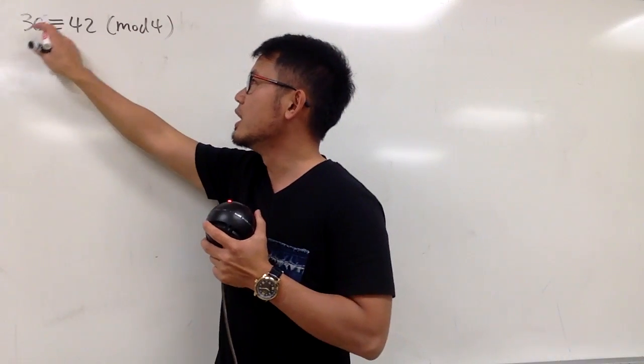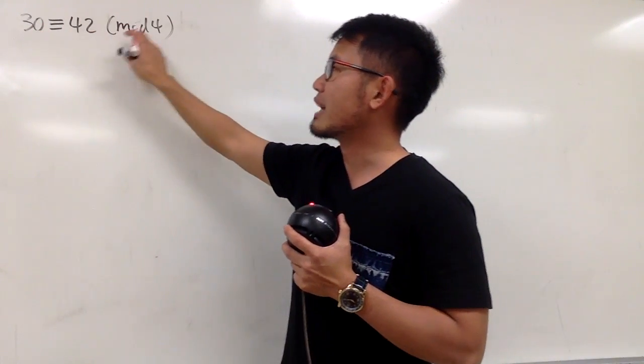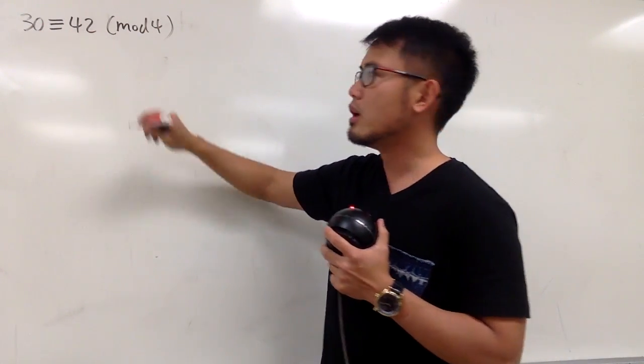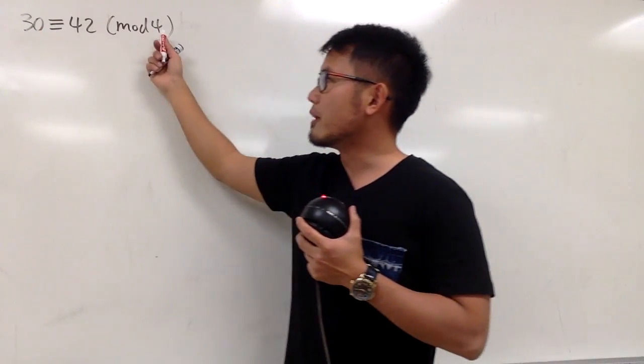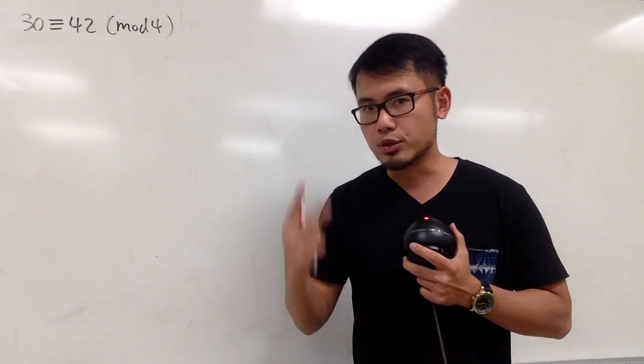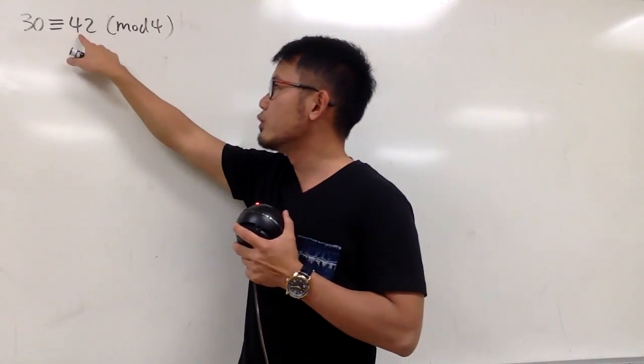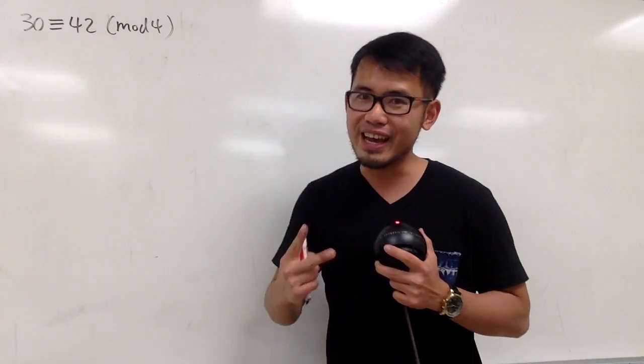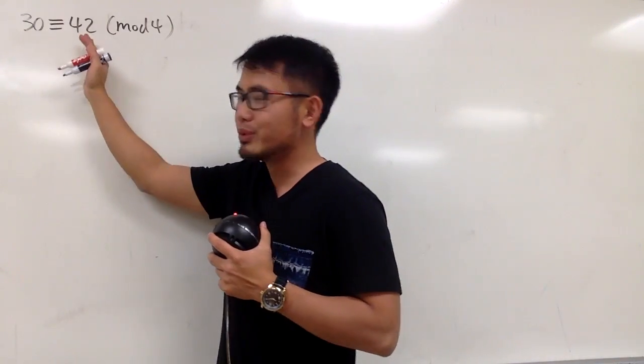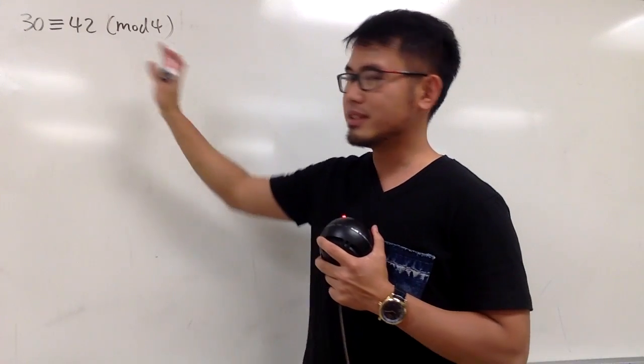Let's take a look at 30 congruent to 42 mod 4 first as an example. First of all, let's just do a quick check. 30 divided by 4 is 7, which is a remainder of 2. Likewise, 42 divided by 4, we get 10, which is a remainder of 2. They are both congruent to 2 mod 4. So we know this is true.